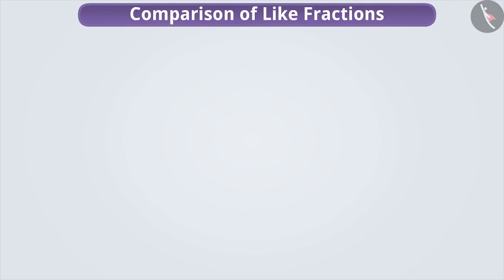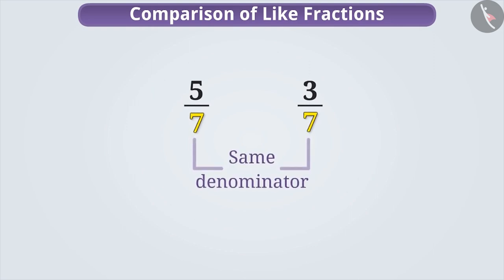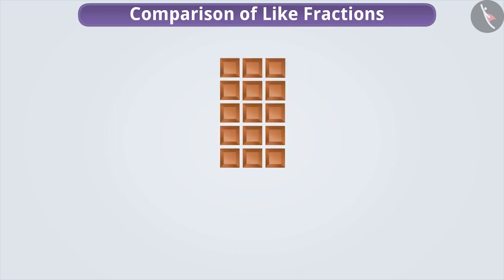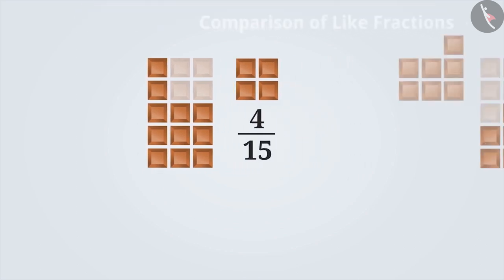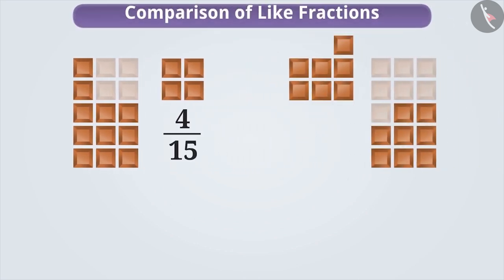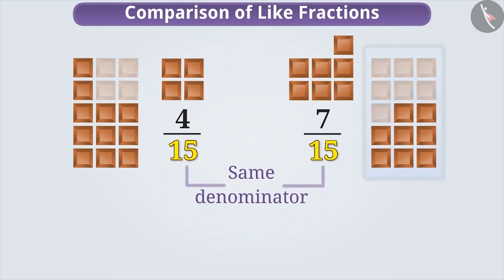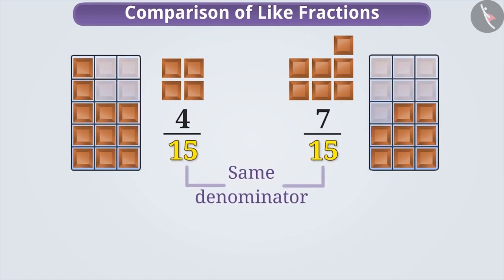So let's first understand how to compare like fractions. Fractions whose denominators are equal are called like fractions. Here is one chocolate. We have made 15 equal parts of it. If we take 4 parts from it, then the fraction will be 4 by 15. Similarly, the fraction of 7 parts will be 7 by 15. Through this, we understand that the total number of parts is equal, but the numerators are different.